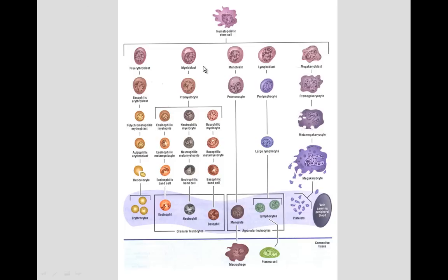Looking at the different blood cells, lymphocytes develop through a series of stages and ultimately produce the lymphocytes seen in the blood. Red blood cells come down through their lineage, losing their nucleus to become erythrocytes. In contrast, monoblasts give rise to promonocytes, and promyelocytes then produce eosinophils, neutrophils, or basophils — all from the same cell lineage.